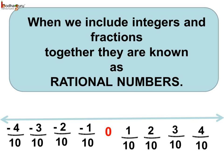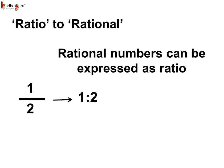When we include the integers and the fractions, they are known as the rational numbers. The word rational comes from the term ratio or we can say rational number is a number that can be expressed as a ratio. A fraction is a rational number as it can be expressed as a ratio. For example, 1 by 2 means 1 is to 2.